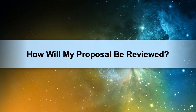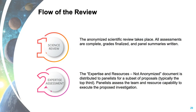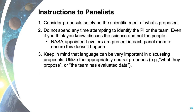How will your proposals be reviewed? The flow is as follows. First, there is an anonymized scientific review where the panel discusses the anonymized proposals, completes all assessments, finalizes grades, and writes panel summaries. Then the expertise and resources document is distributed to panelists for a subset of proposals — typically the top third — and panelists assess the team's capability to execute the proposed investigation. We tell reviewers to consider proposals solely on scientific merit, not to attempt to identify the PI, and even if they think they know the team's identity, to discuss the science and not the people.